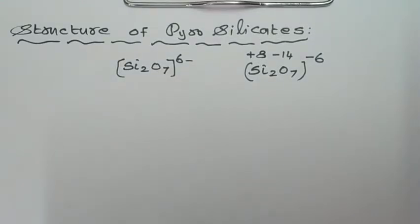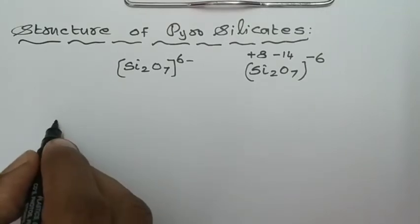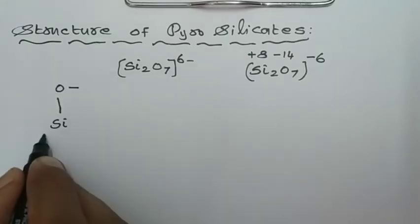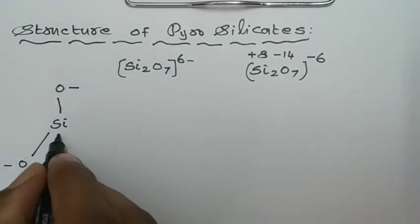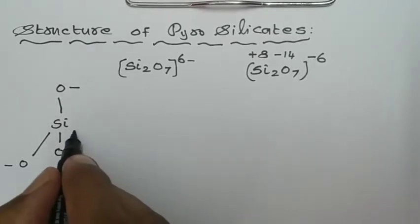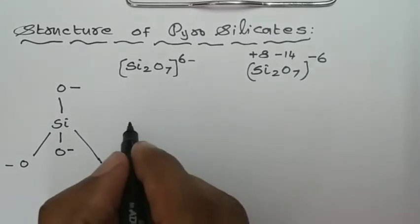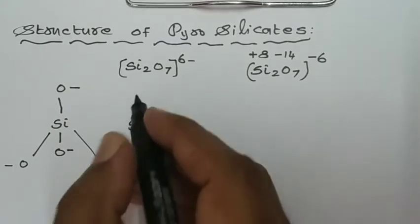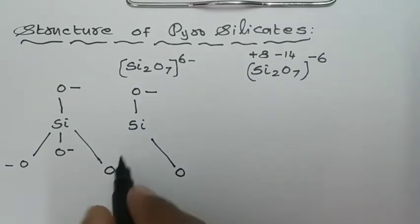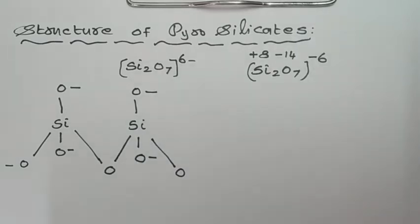When two SiO₄⁴⁻ ions are fused together: one silicon, another silicon. There is one oxygen in the center, one oxygen on the left, one oxygen on the right. This oxygen is perpendicular to the plane and is common to both SiO₄⁴⁻ ions. Another silicon above the plane has one oxygen on the right side and one oxygen perpendicular to the plane. This oxygen is common to both SiO₄ and this oxygen is perpendicular to the plane.